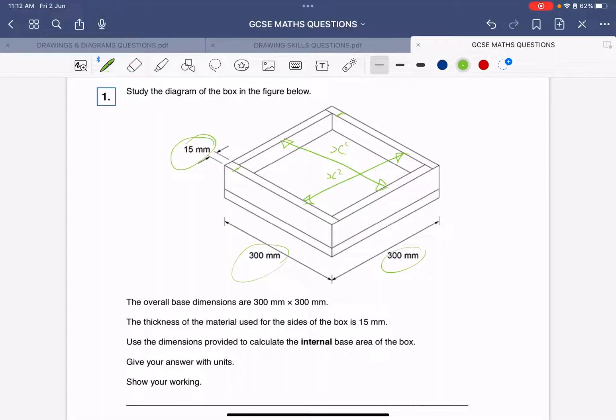We can assume it's the same thickness, because they've not given a different dimension. So all we need to do is take 300 millimeters and then subtract it by 15 times 2. So 2 lots of 15 will then give us that internal dimension.